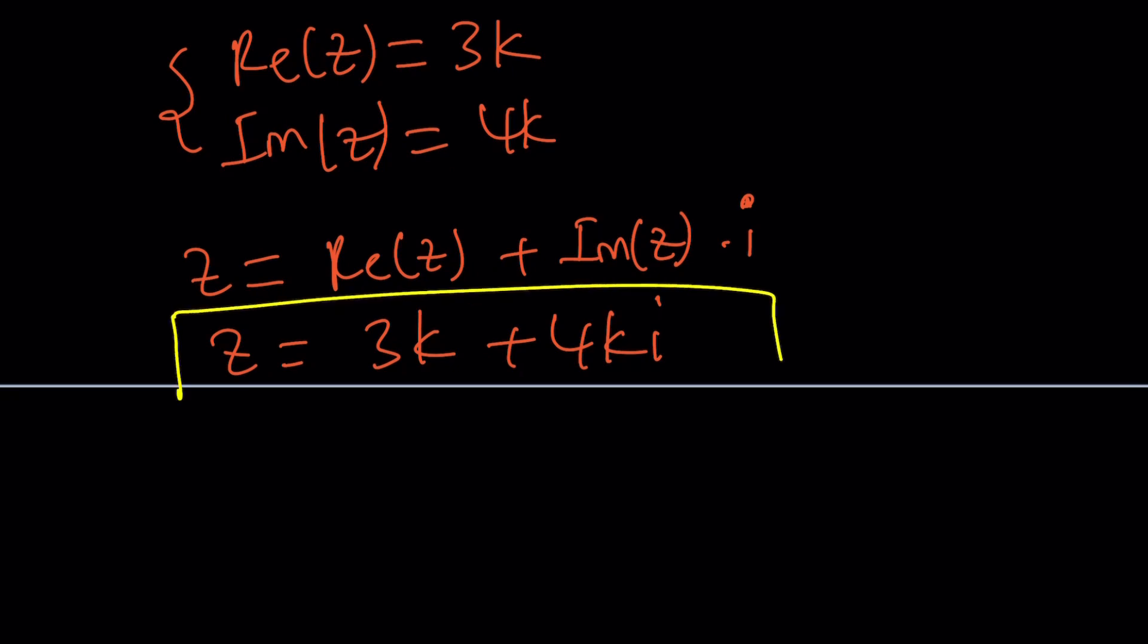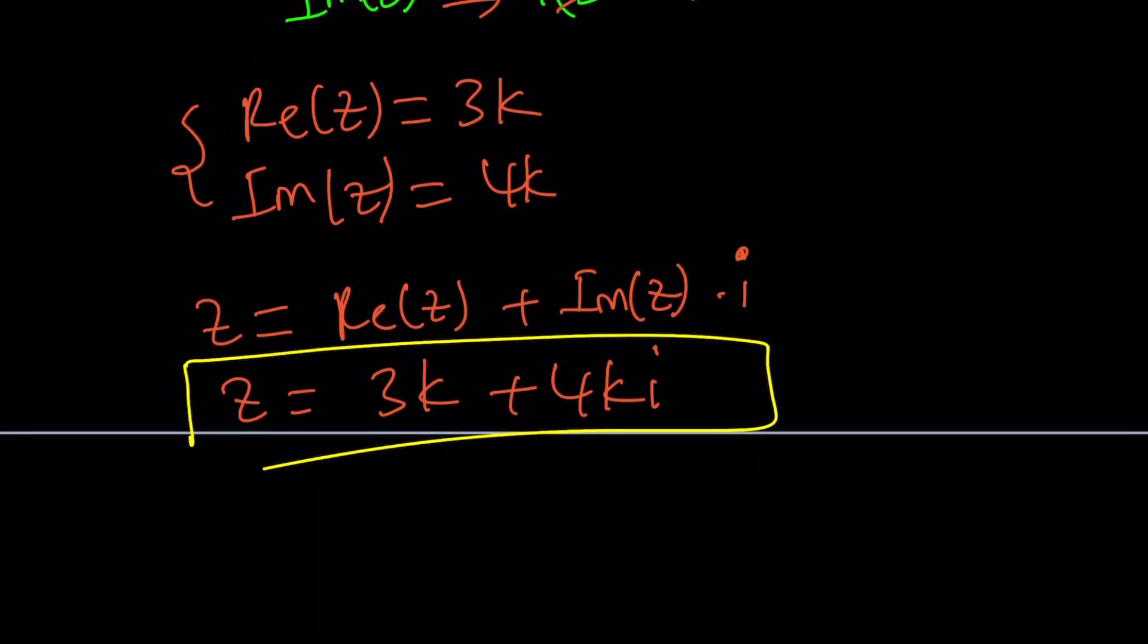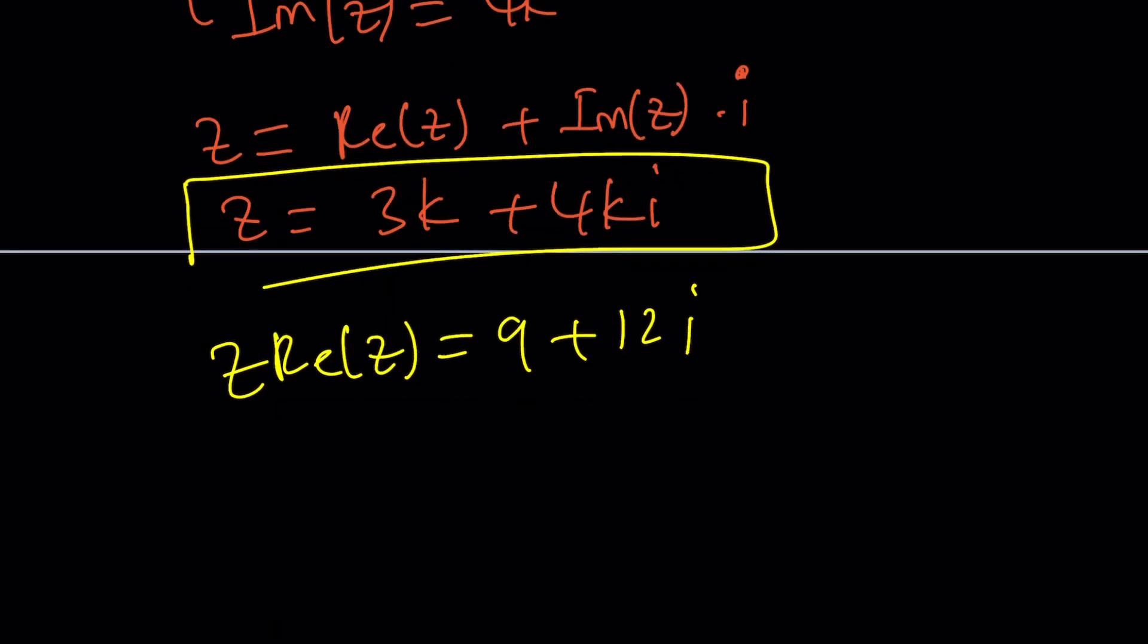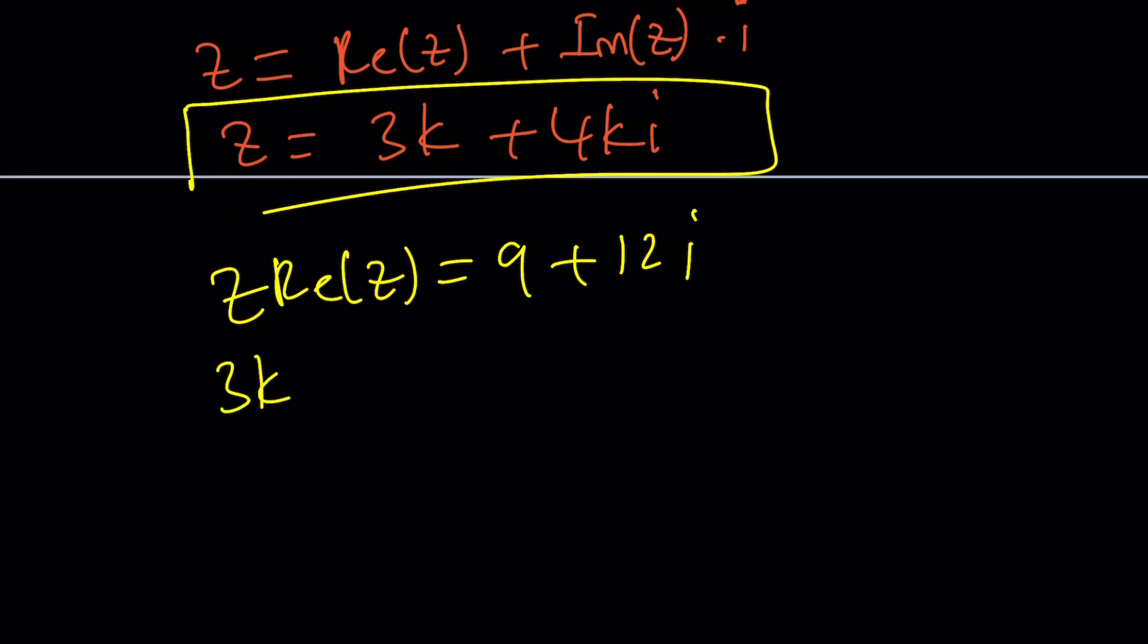What does the first equation say? The first equation says Z times the real part of Z is 9 plus 12i. Let's go ahead and plug it in. Z is 3k plus 4ki. And we're going to multiply that by the real part of Z, which is 3k, this one right here.